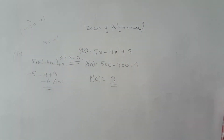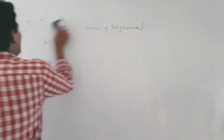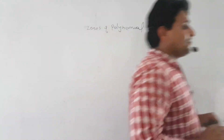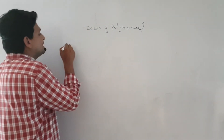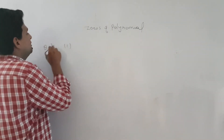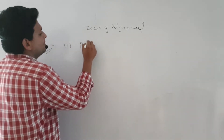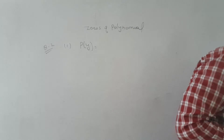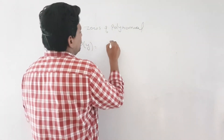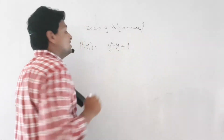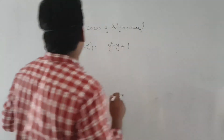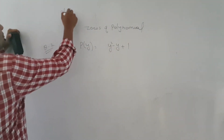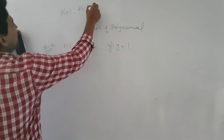Next, question number 2: find p(0), p(1), and p(2) for the given polynomial. The polynomial of y is given. Write p(y) equals y squared minus y plus 1. You have to check on three values: p(0), p(1), and p(2).